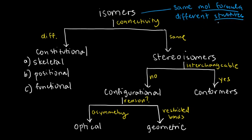When we say different structure, that's a broad statement, because there are a lot of things about the structure of organic compounds. That's why we have so many different types of isomers — for many different ways of differentiating structure.